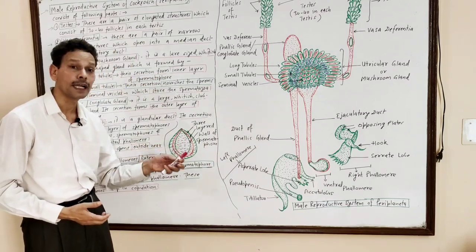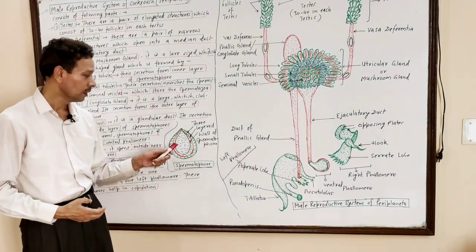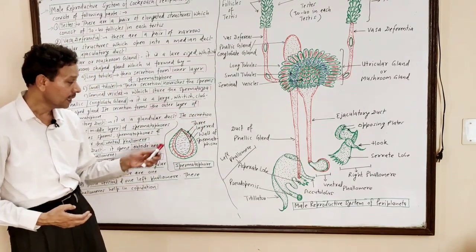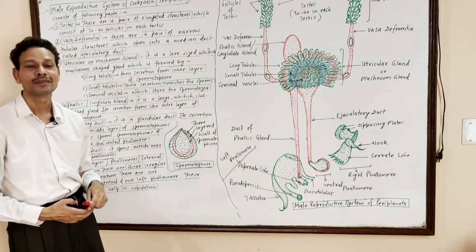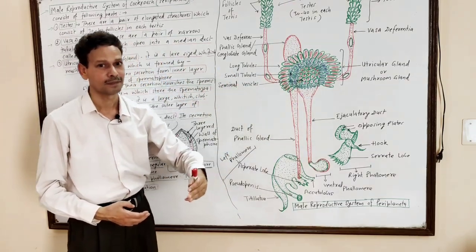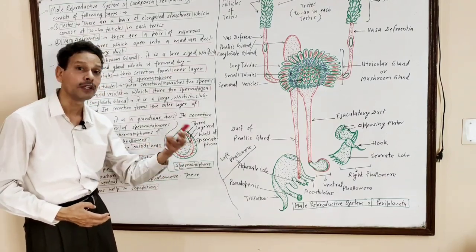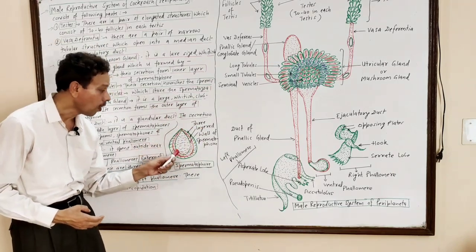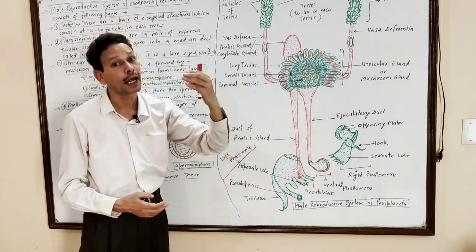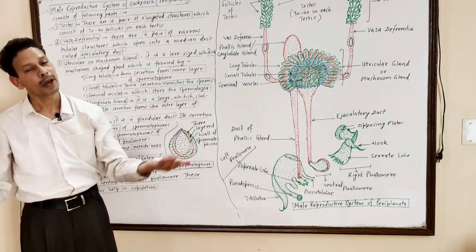The spermatophore is a special structure in which sperms get stored. The spermatophore wall is made up of three layers. The inner wall is formed by the secretion of the long tubules. The secretion of the small tubules nourishes the spermatogonia stored in the seminal vesicles.